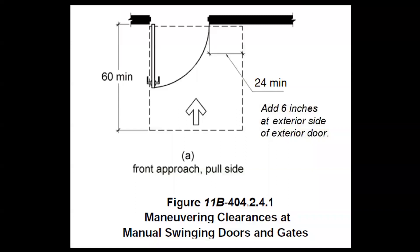One difference is in the California Building Code. The CBC states that if the door is an exterior door, we are required to add 6 inches to the 18-inch latch side clearance, making the latch side clearance a minimum of 24 inches rather than 18 inches. But if it is an interior door, the same 18 inches will apply.